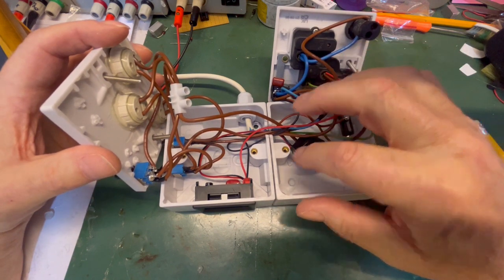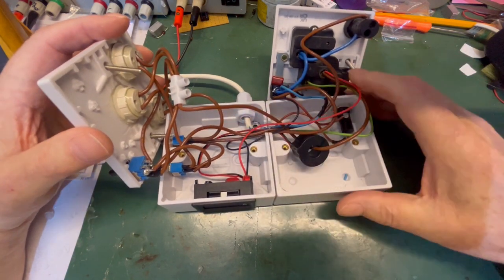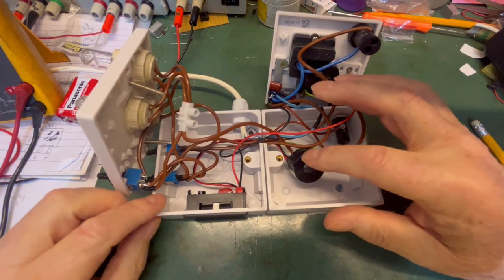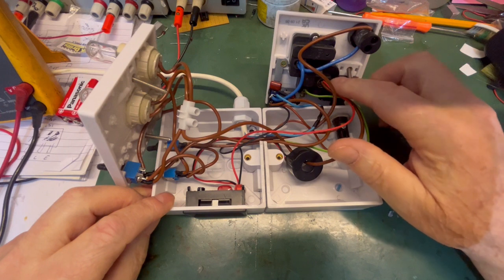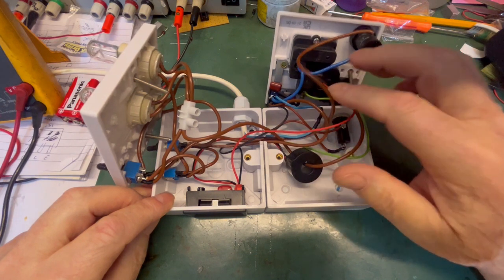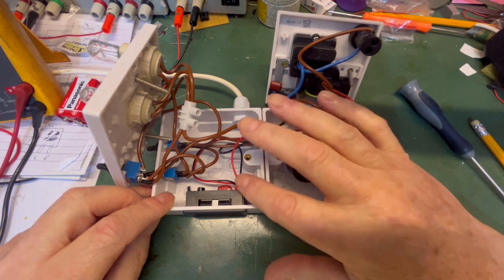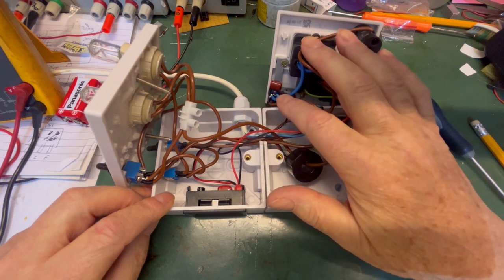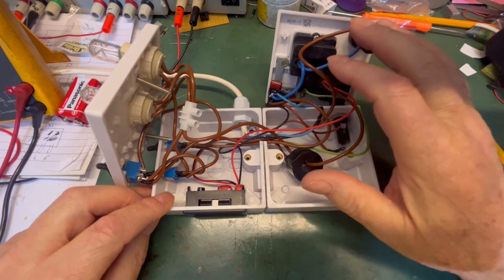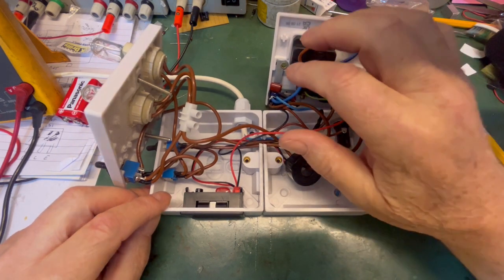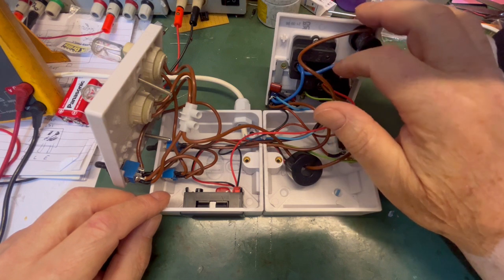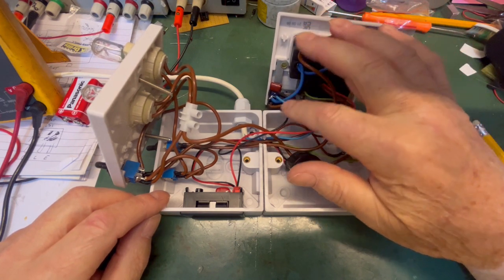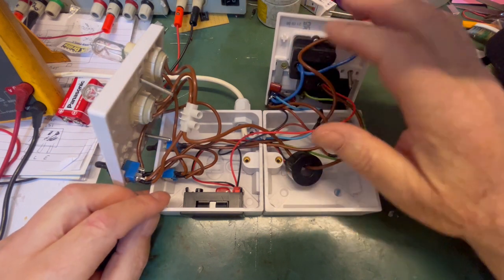To the plug socket. Via this double pole, double throw switch here. Which is the bypass, obviously. Which bypasses the whole lot. The display. Obviously the current sense goes to the live socket there on the plug. Comes back to there. And the neutral. I've just connected the neutral to my switch. Don't really matter where that goes. As long as it's connected to the neutral. I could have connected it to the plug socket, I suppose. But it's the same thing, basically.